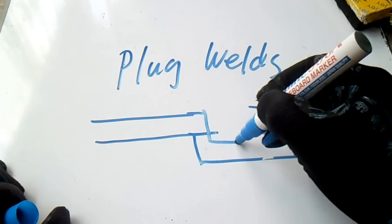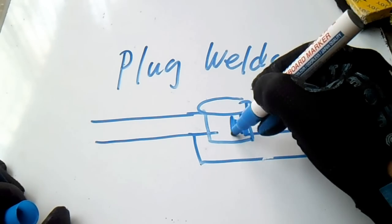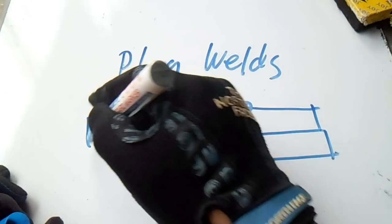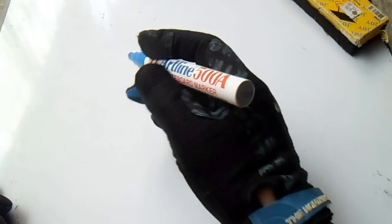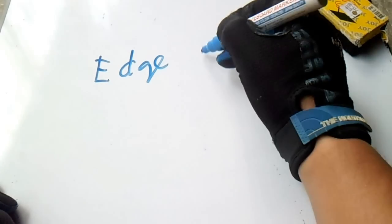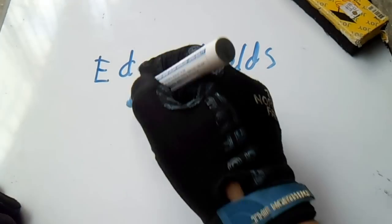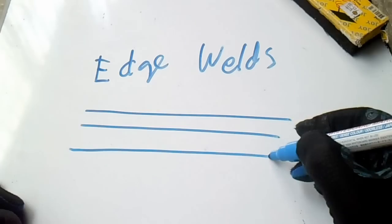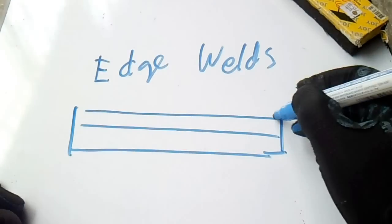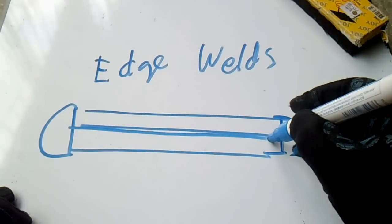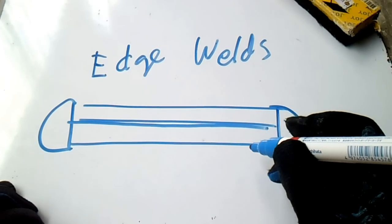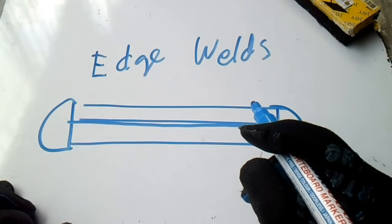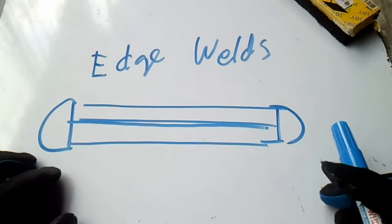Number four is plug weld — here is the symbol for plug or slot weld. Number five, the last type, is edge weld — here is the symbol, with welding from the edge. So those are the five types of common welds: butt, fillet, spot, plug or slot, and edge weld. Thanks for watching, have a nice day.